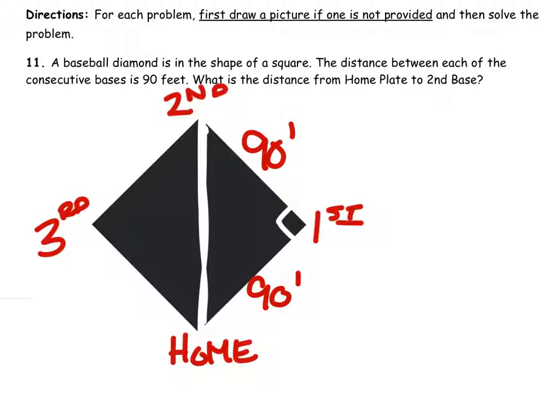So we have a right triangle where we have two legs, but not a hypotenuse. So we get to use the Pythagorean theorem.